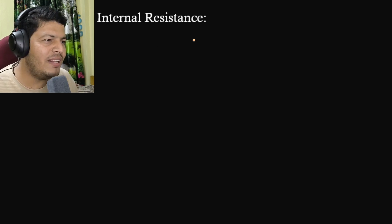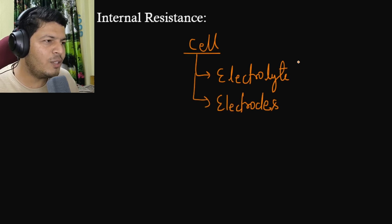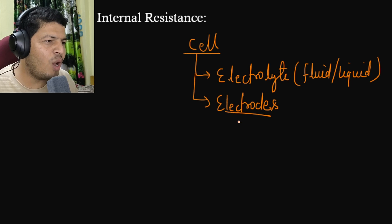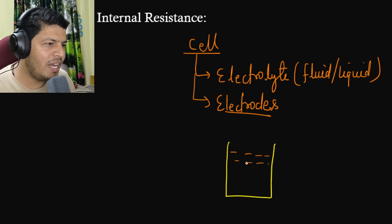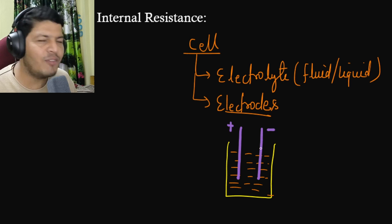Inside a cell we have internal resistance, and inside this cell we have two major components: one is the electrolyte and another is the electrodes. The electrolyte is a fluid or liquid that can flow, and the electrodes are of a certain material. Inside the cell, the electrolyte is filled and we have two major electrodes — one positive and one negative.